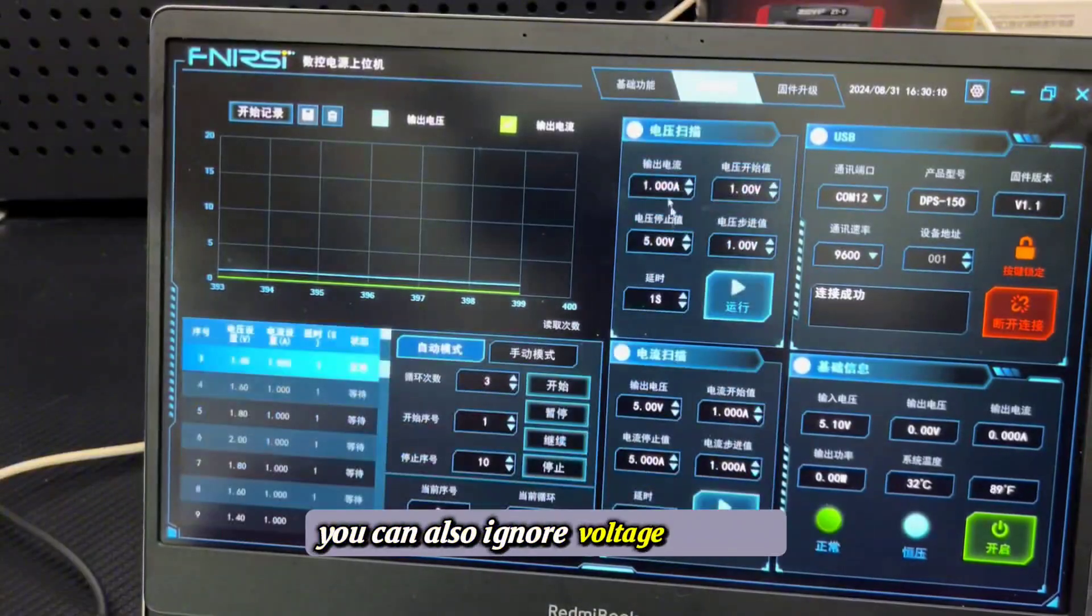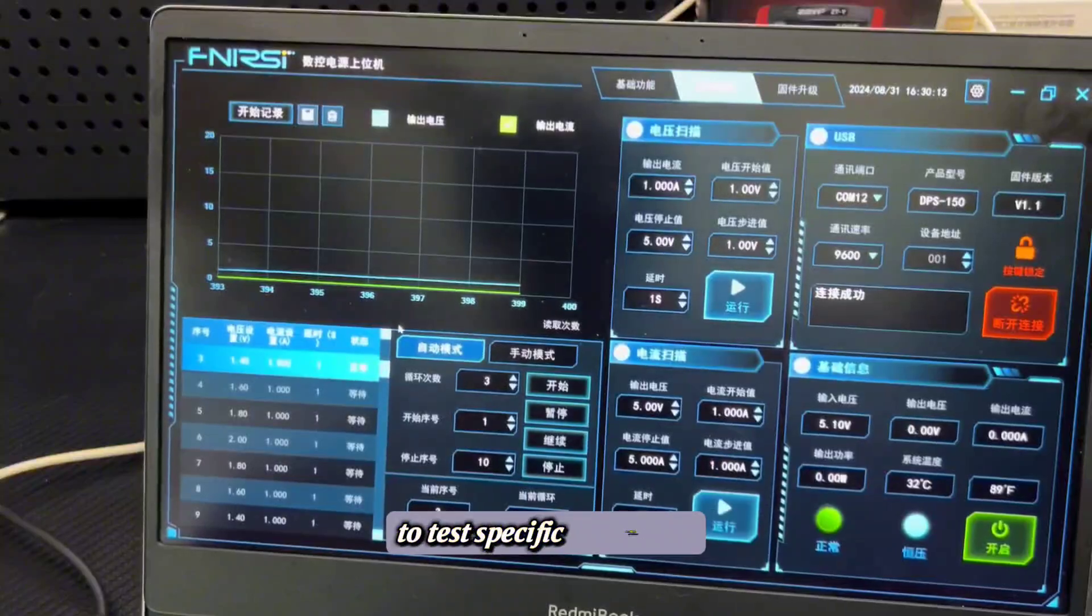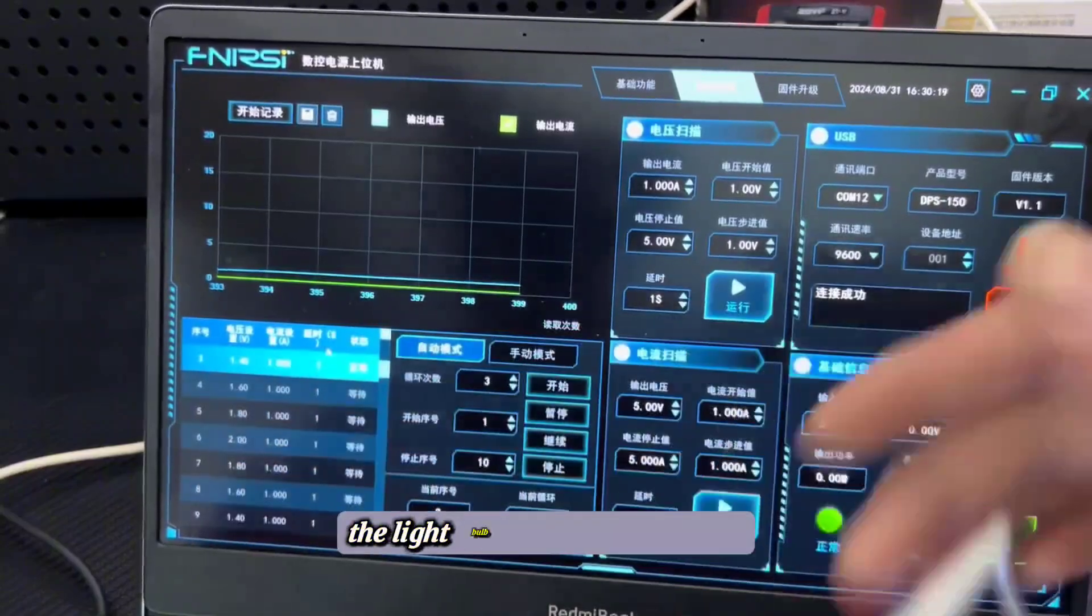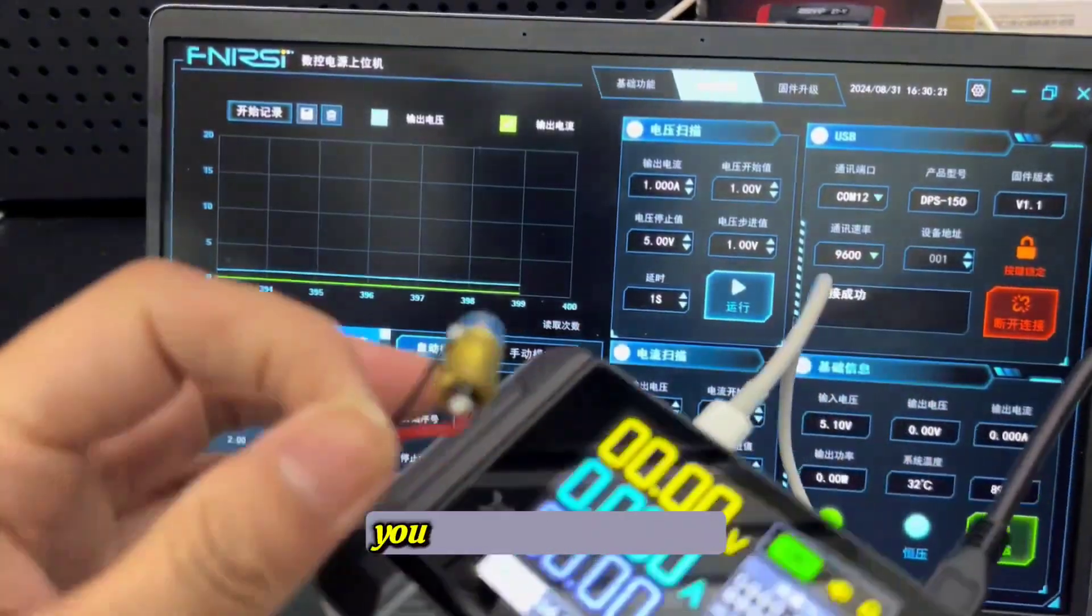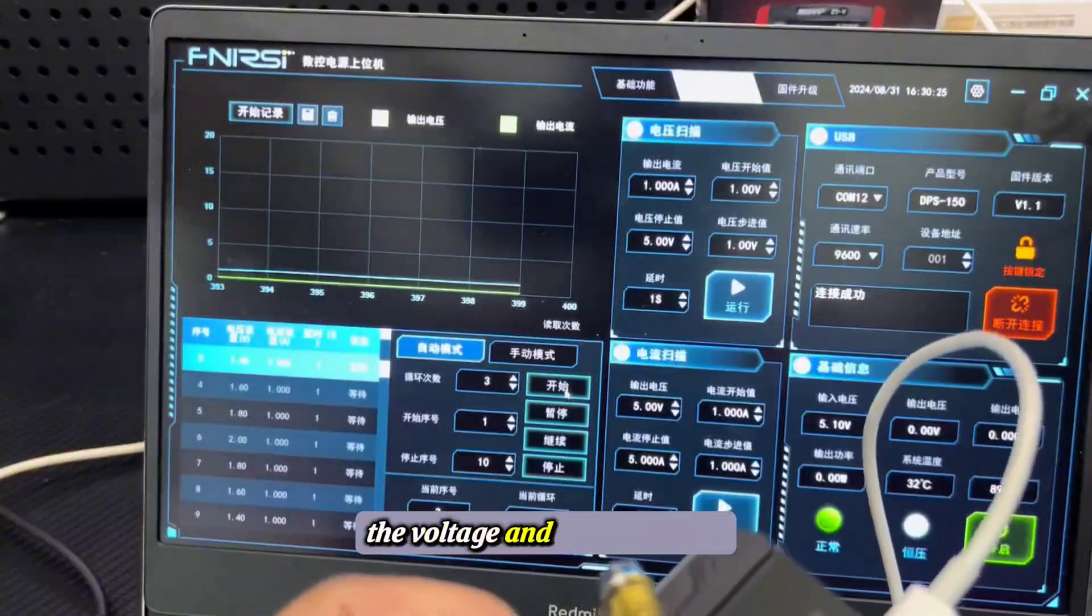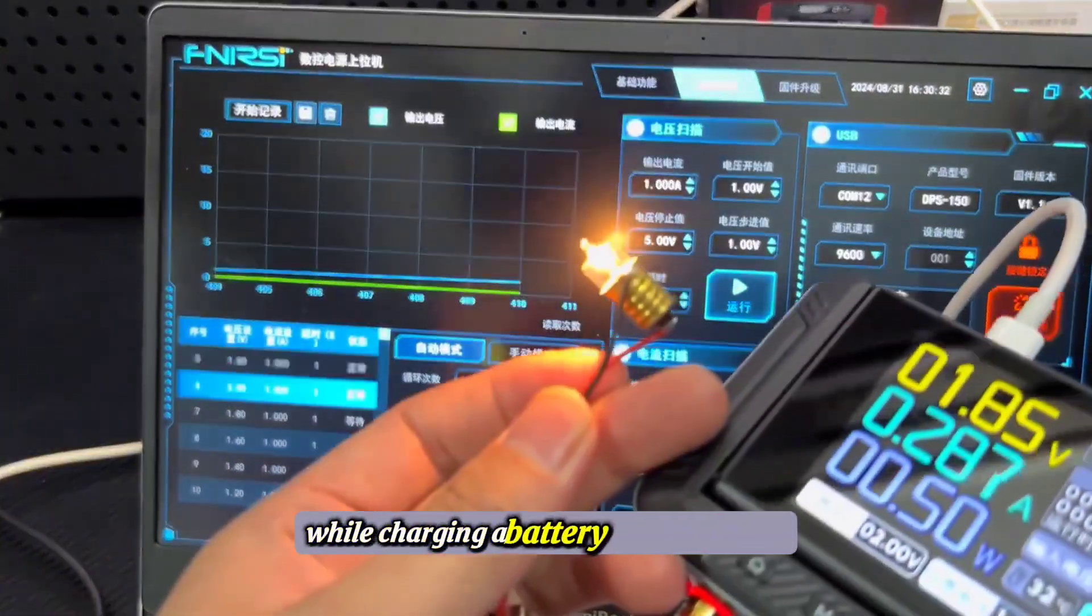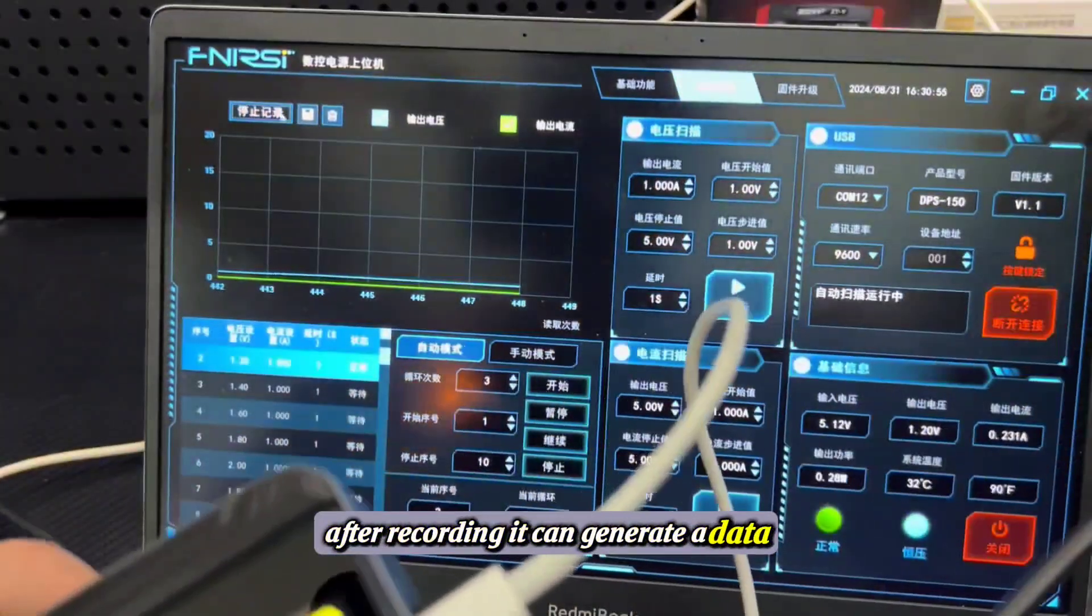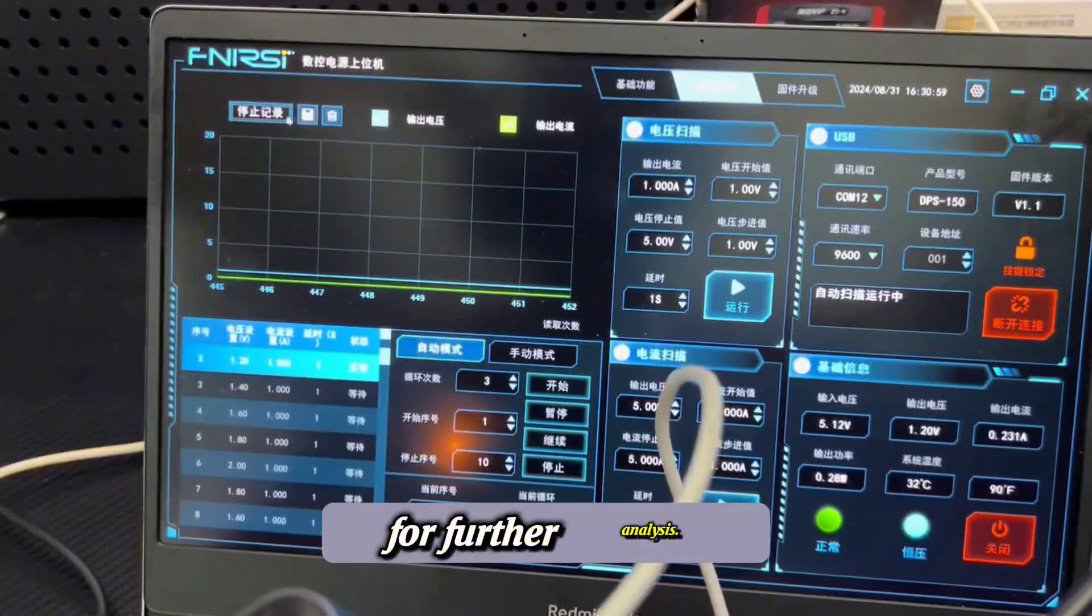The software supports six shortcut groups and allows you to adjust voltage and current settings. You can also ignore voltage settings to test specific conditions. For example, if you set it to 1.6 volts, the light bulb will adjust in cycles. You can even start recording the voltage and current curves while charging a battery or testing loads. After recording, it can generate a data table that you can save to your desktop for further analysis.